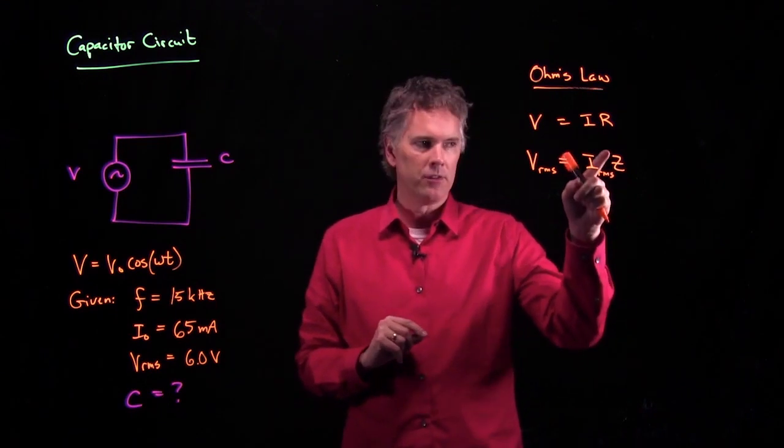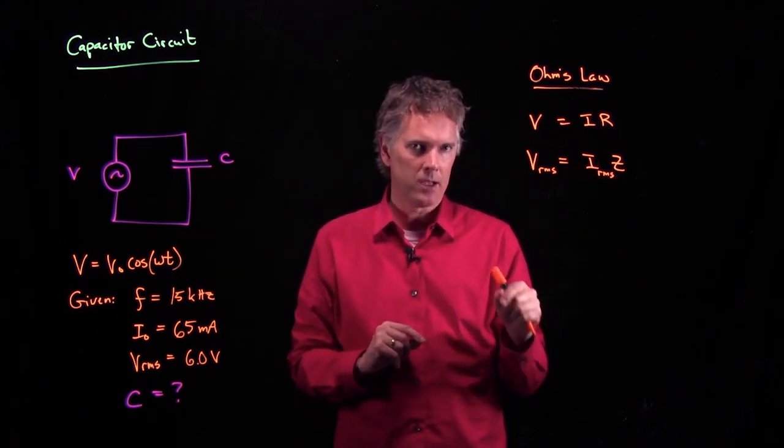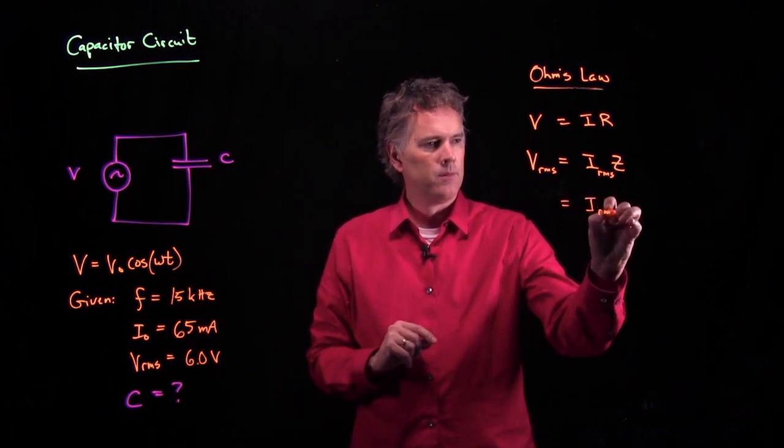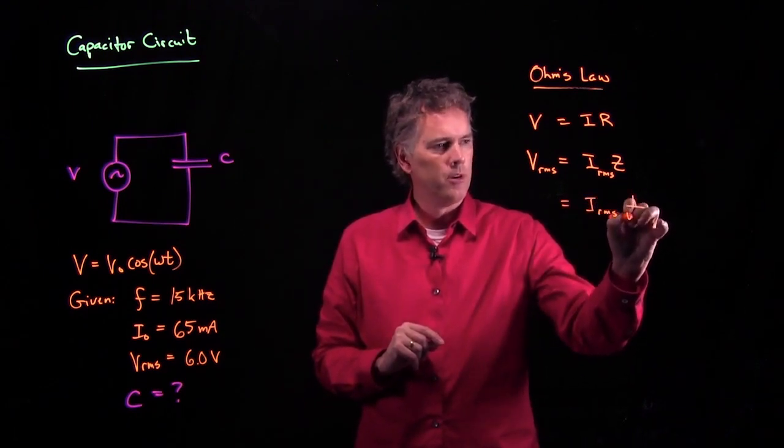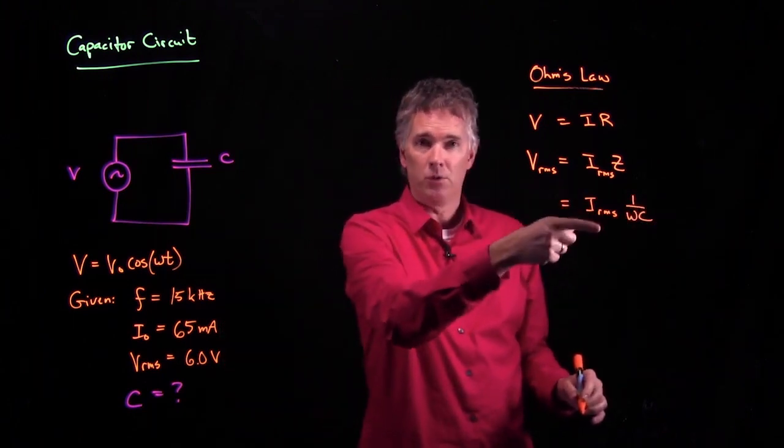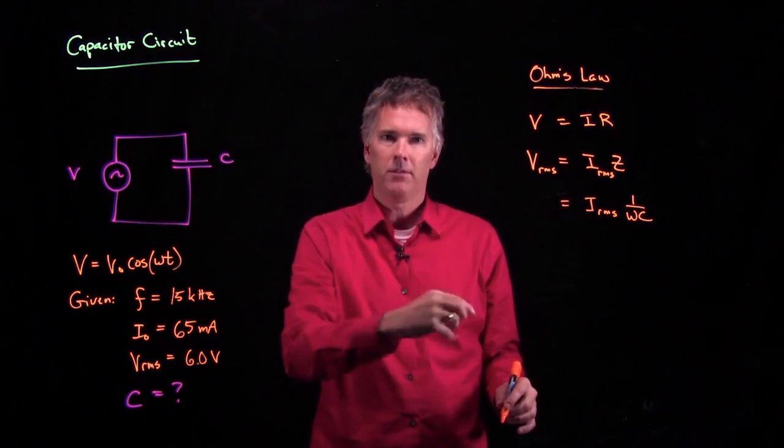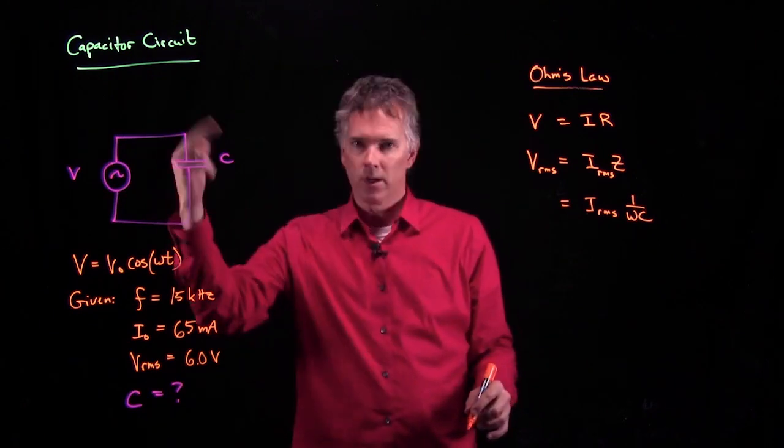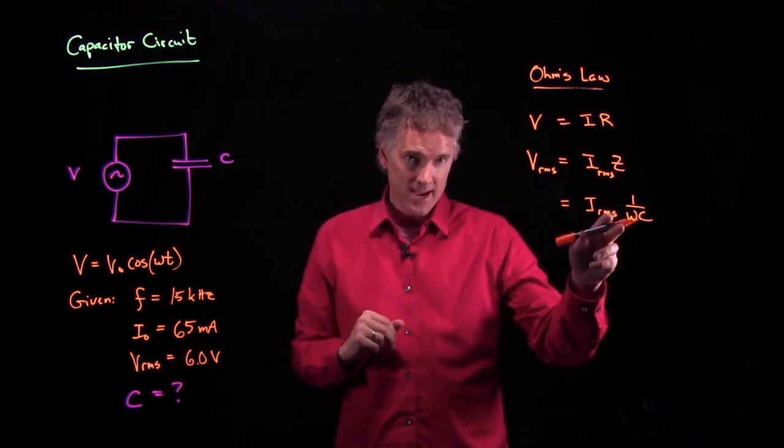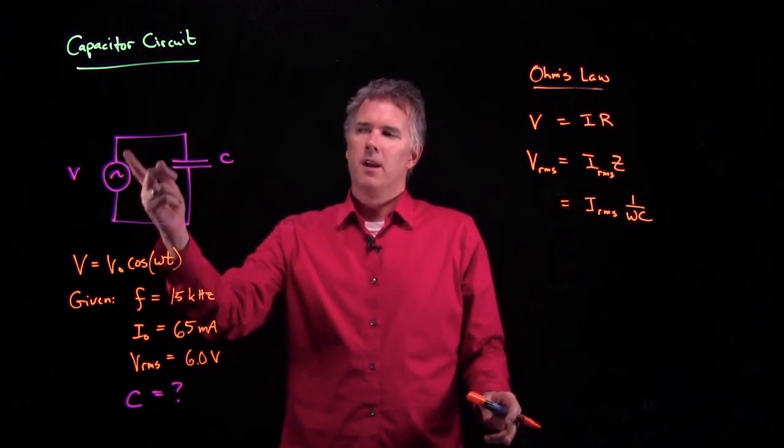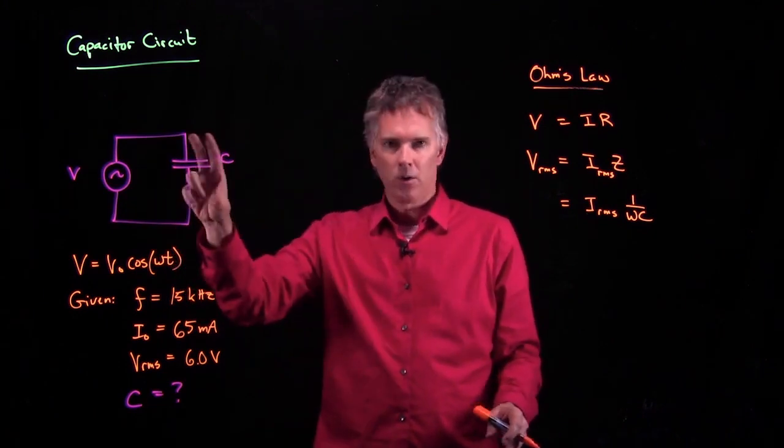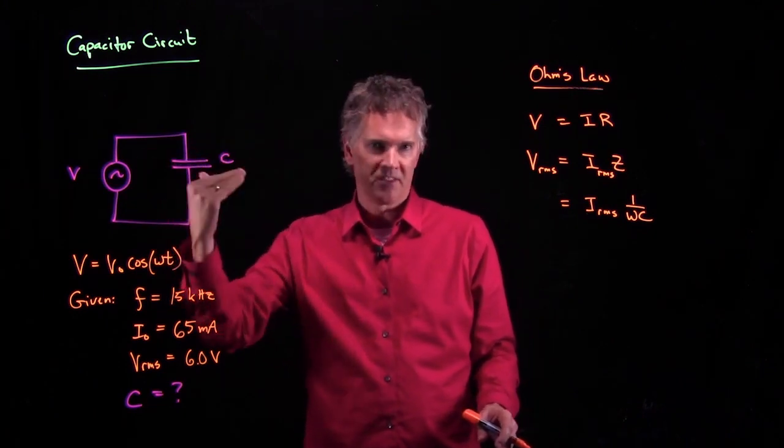Now, hopefully, what you remember is Z for a capacitor is 1 over Omega times C, right? As the frequency goes up, the impedance of the capacitor goes down. That current can jump right across there. As the frequency goes down, the impedance goes up. And that makes sense. If you try to drive DC current through the capacitor, it's not going to go through. It charges up one plate, and then it stops moving.